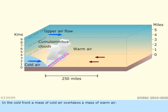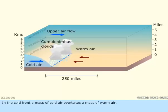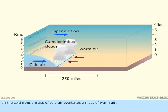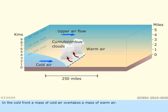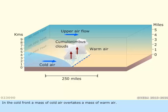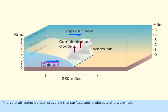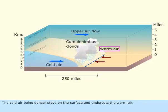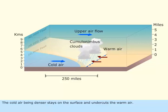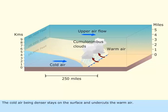In a cold front, a mass of cold air overtakes a mass of warm air. The cold air, being denser, stays on the surface and undercuts the warm air.